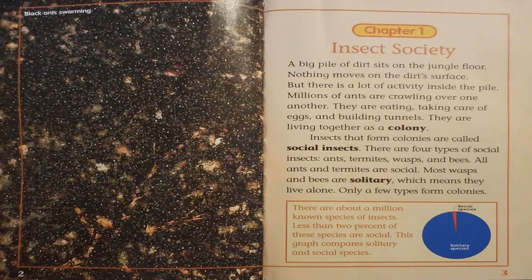Chapter 1: Insect Society. A big pile of dirt sits on the jungle floor. Nothing moves on the dirt surface, but there is a lot of activity inside the pile. Millions of ants are crawling over one another. They are eating, taking care of eggs, and building tunnels. They are living together as a colony.